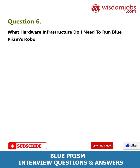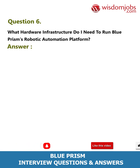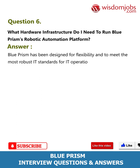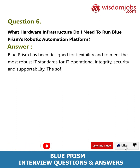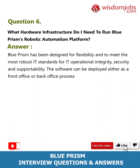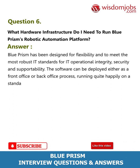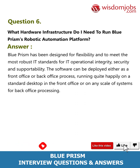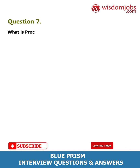Question 6: What hardware infrastructure do I need to run Blue Prism's robotic automation platform? Answer: Blue Prism has been designed for flexibility and to meet the most robust IT standards for IT operational integrity, security, and supportability. The software can be deployed either as a front office or back office process, running on a standard desktop in the front office or on any scale of systems for back office processing. Question 7: What is Process Studio? Answer: A Blue Prism process is created as a diagram that looks much like a common business flow diagram.